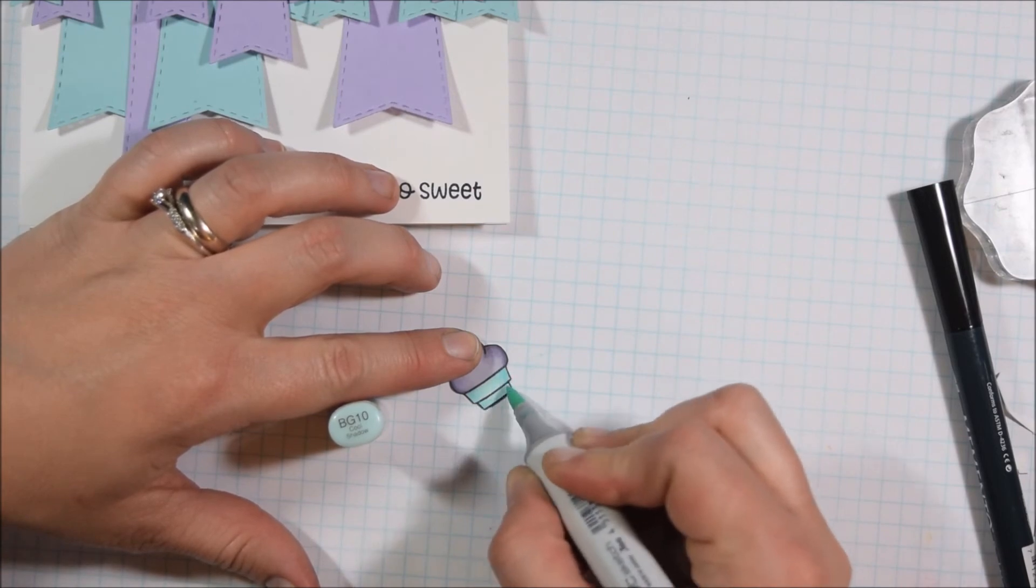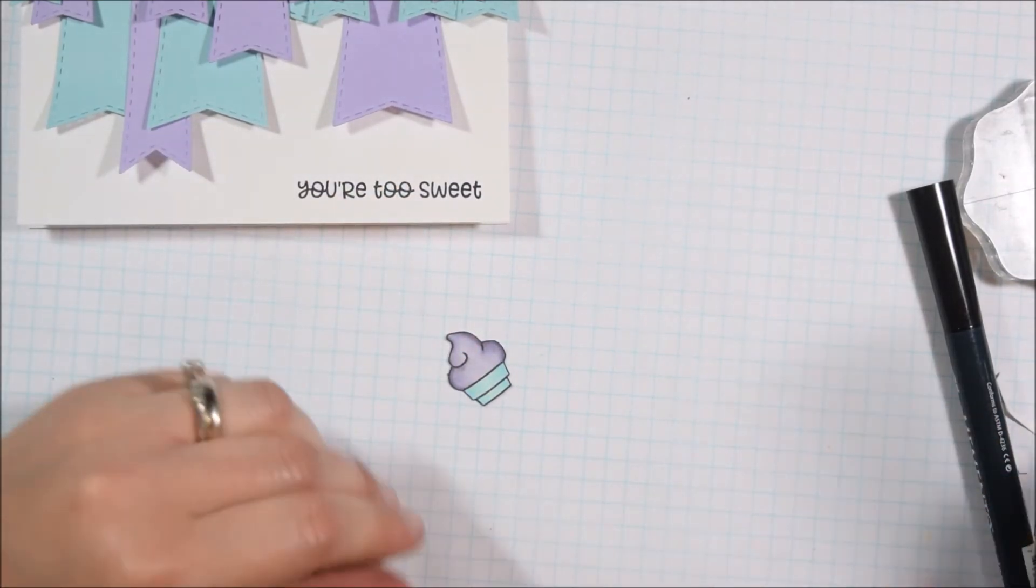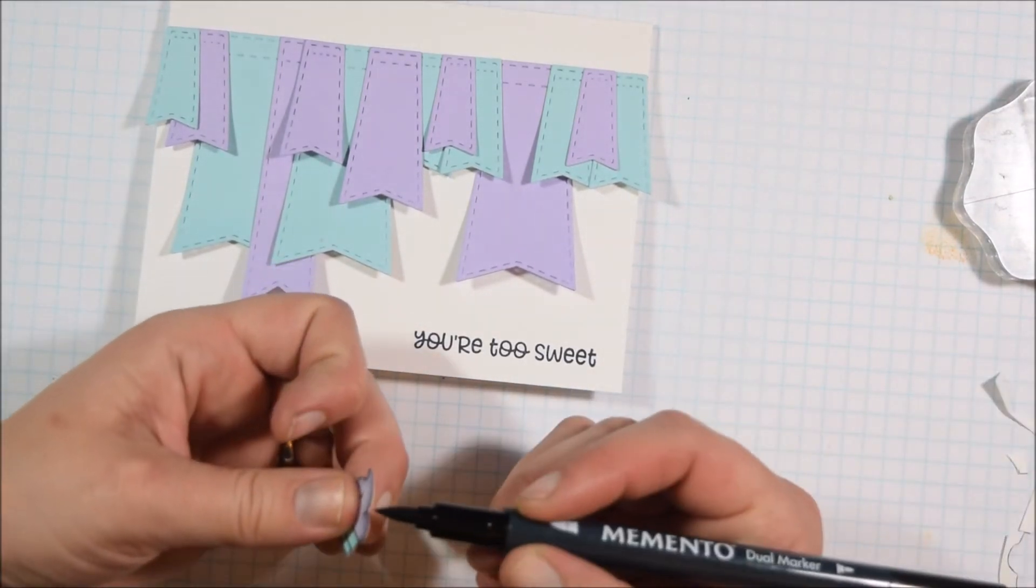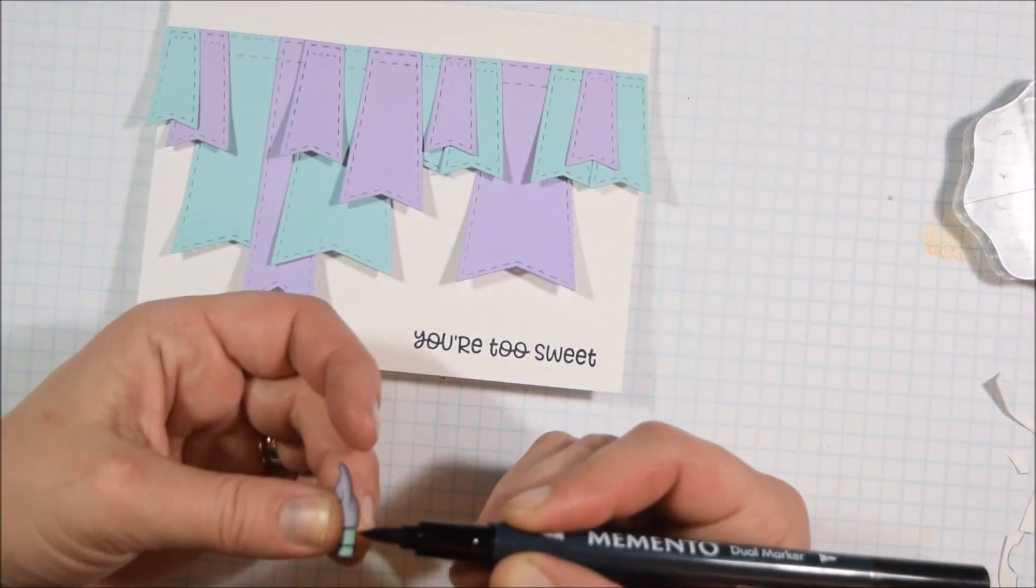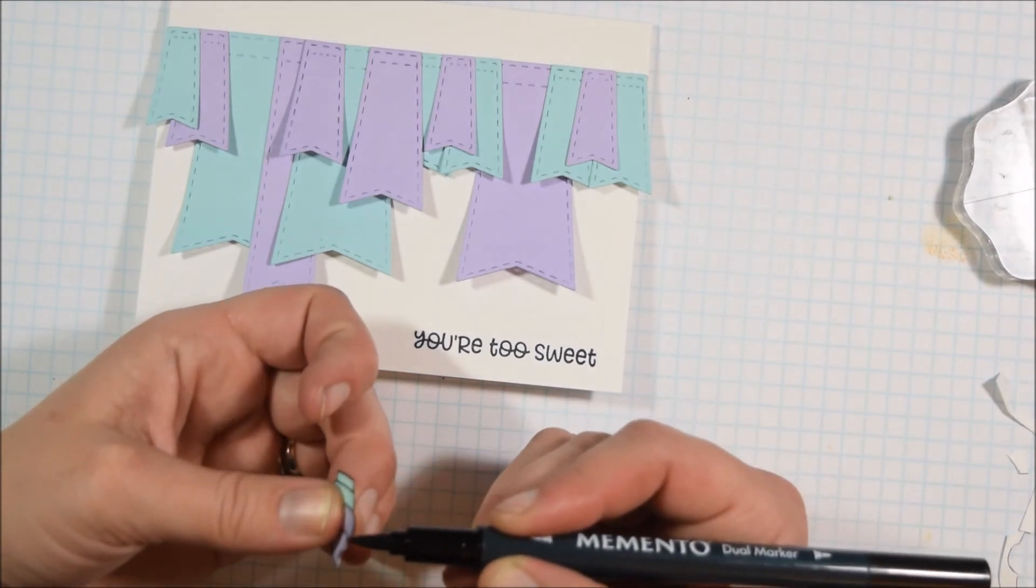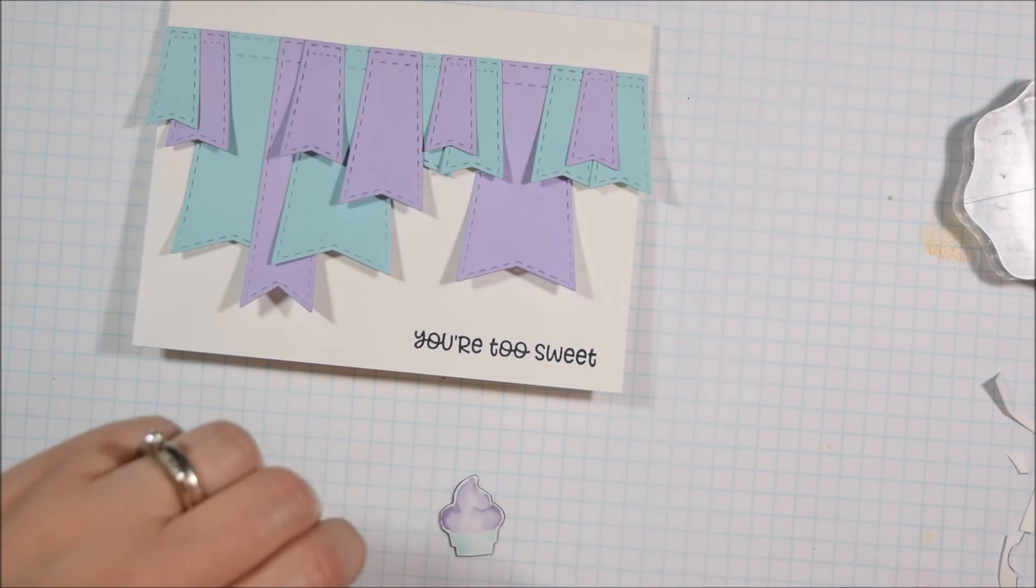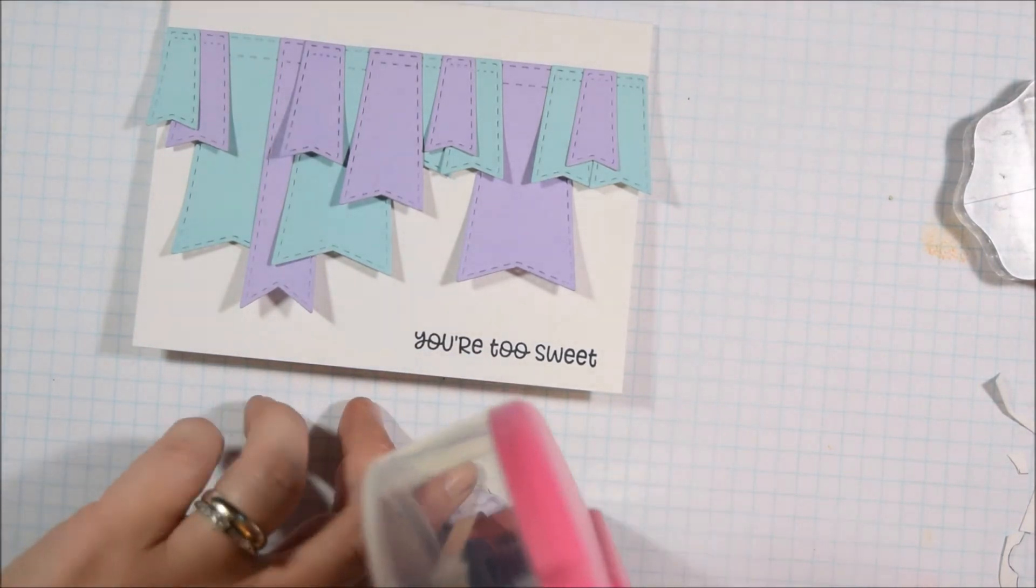So in order to fix it I did come in with a little bit of BG10 and that made it just that little hint of green and match the paper a little bit better. I fussy cut it out with my scissors and then I'm taking this Memento black pen and tracing the edges just to make them look a little bit cleaner.